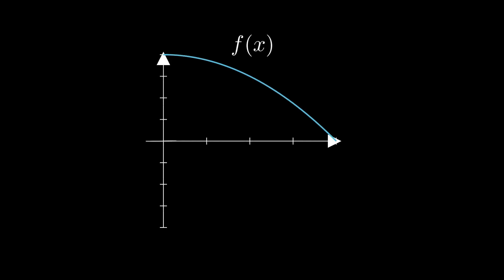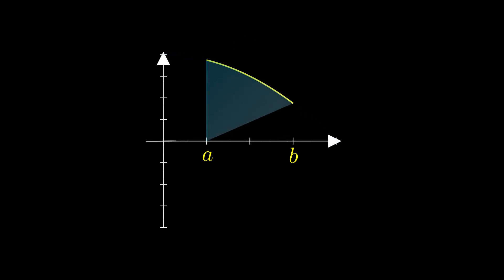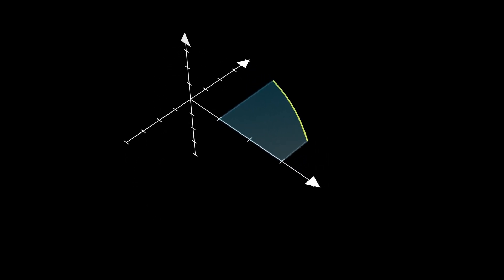So say we have a region bounded by a function f of x, the x-axis, from x equals a to x equals b. We know that this region is the definite integral of f of x from a to b.